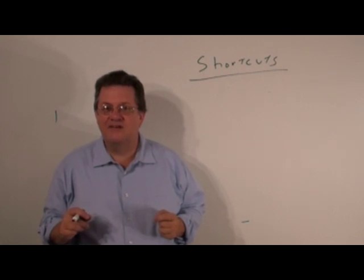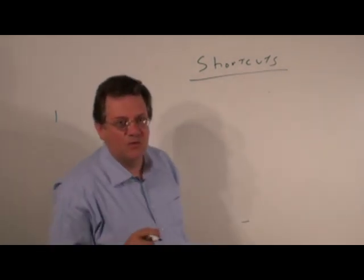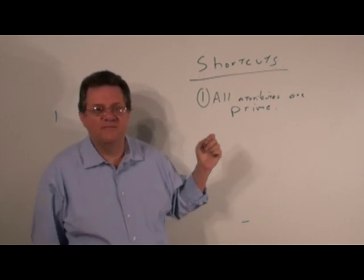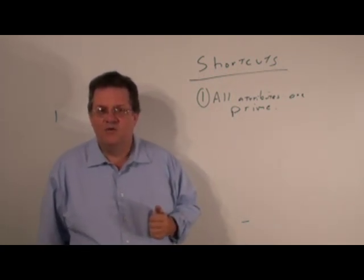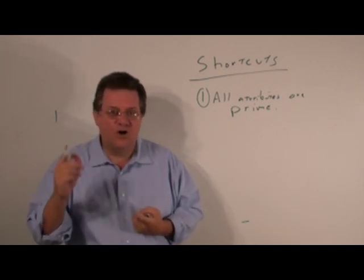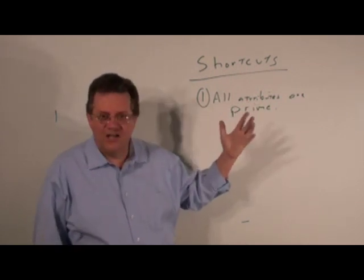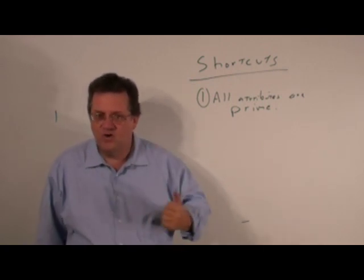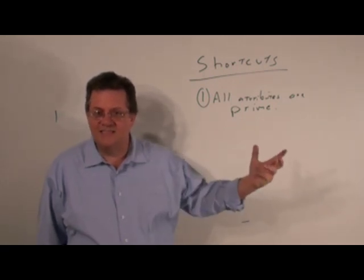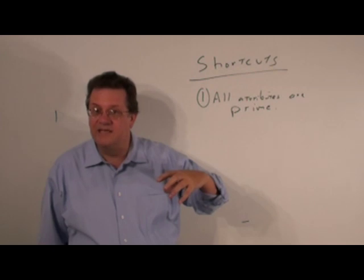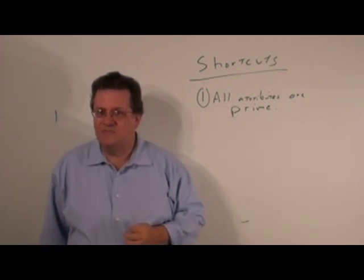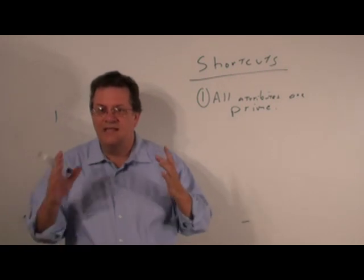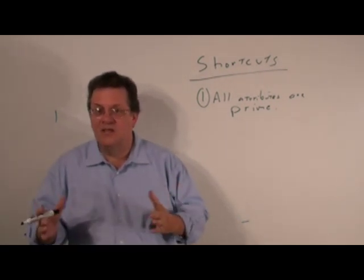Let's take a look at a couple of shortcuts that make your life easier when working with normal forms. Shortcut number one: if all the attributes are prime, then we know it's in second normal form — because you can only violate second normal form when you've got at least one non-prime attribute on the right-hand side. Furthermore, we know it's in third normal form, because to violate third normal form you also need a non-prime on the right-hand side and the left-hand side must be a super key. So whenever all attributes are prime, you're guaranteed to be in at least third normal form.